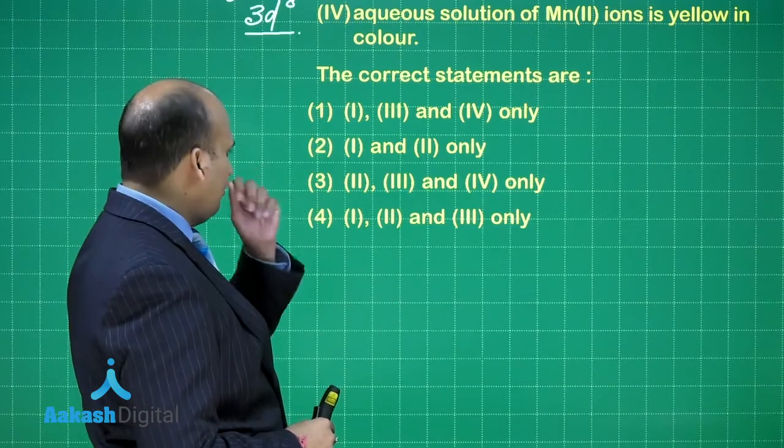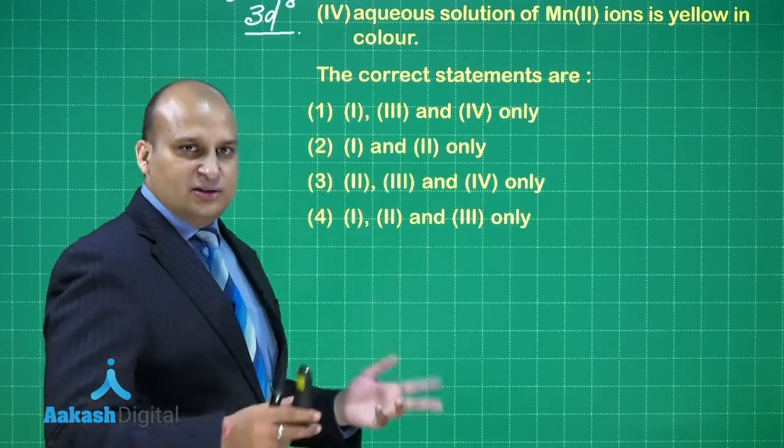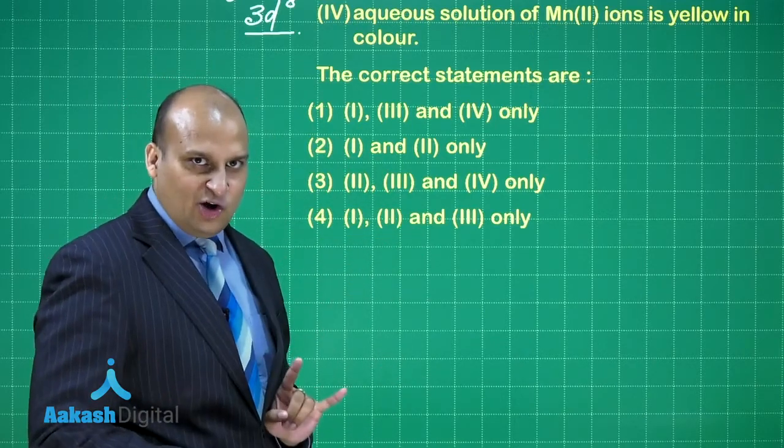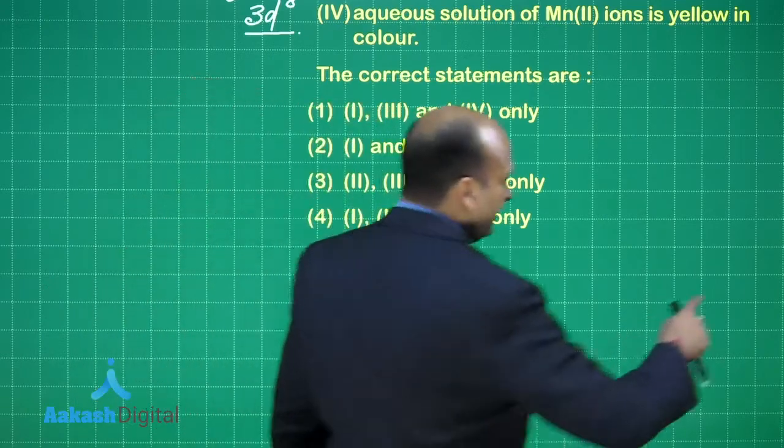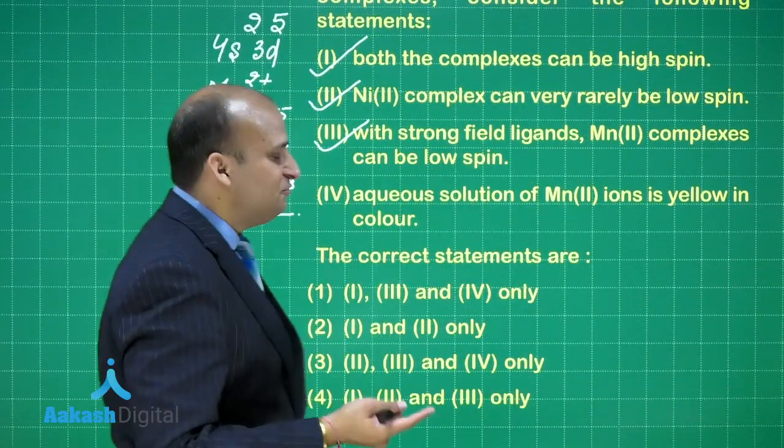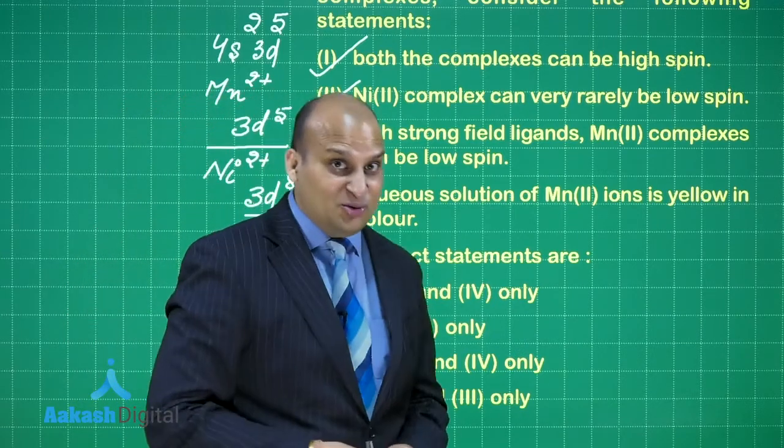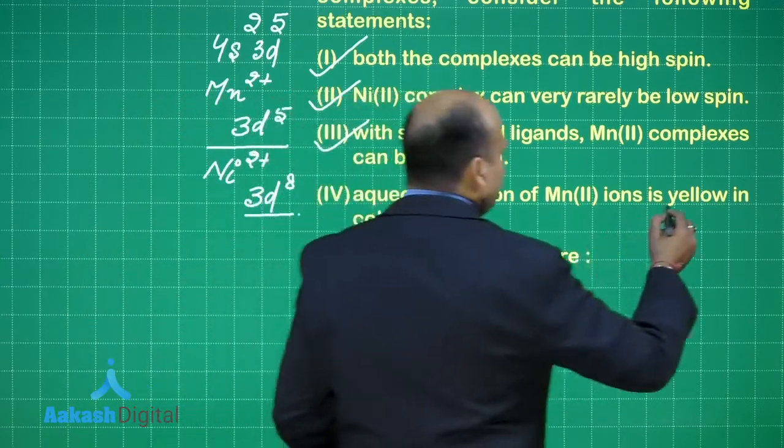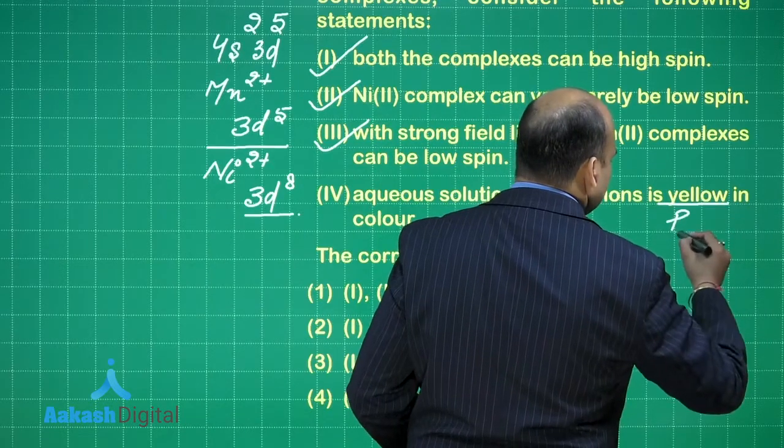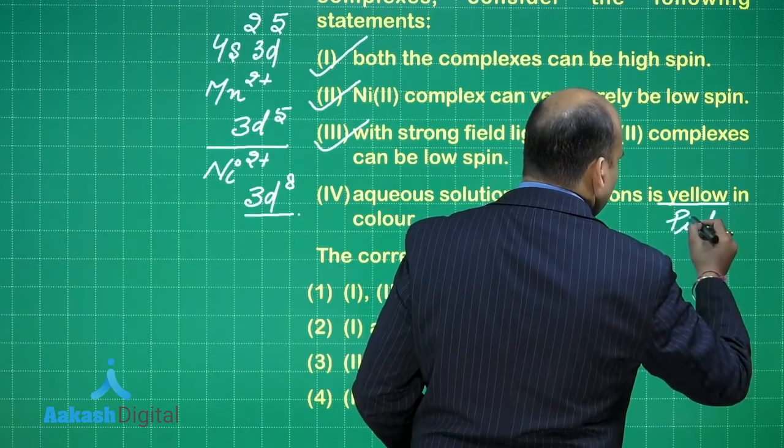Let us have a look at the choices. We can do a bit of elimination technique over here. The idea is 1 is wrong out of these. So first 3 are correct, 4th has to be wrong, but anyways, let us check it out. Aqueous solution of Mn2+ ions is yellow in color, no dear, everybody knows it is not yellow, it is pink in color.